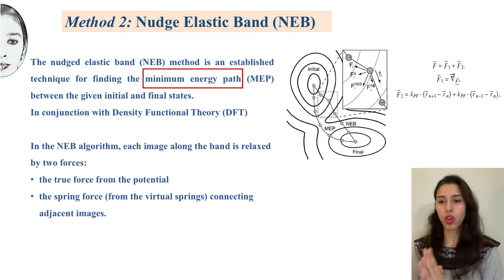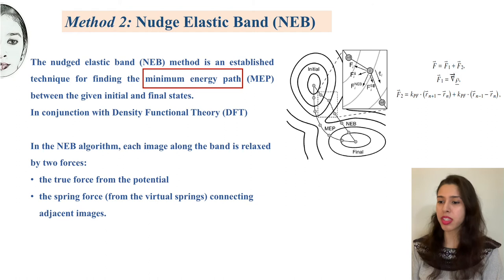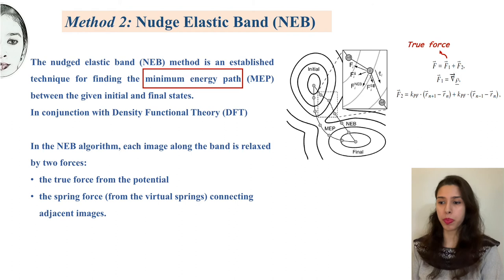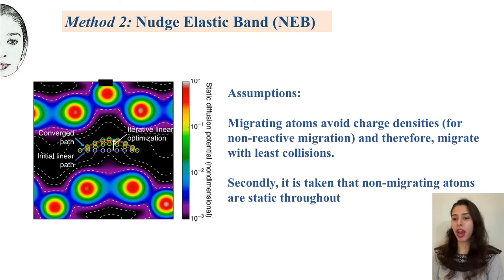In comparison to ATM, the next method — Nudged Elastic Band, NEB — is most commonly used. In this method, the minimum energy path between two states is defined. The initial position of the atom, which is an energy minimum, and the final position of the atom, which is another energy minimum, are known. In between, several images or states are assumed, and on them certain forces are relaxed. These forces are: F1, a true force derived from the potential, and F2, a virtual spring force connecting adjacent images. These forces are relaxed using Density Functional Theory.